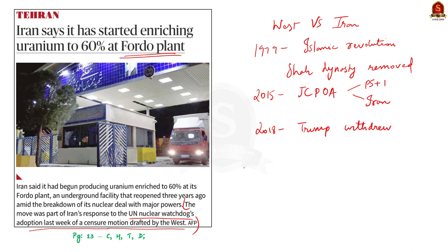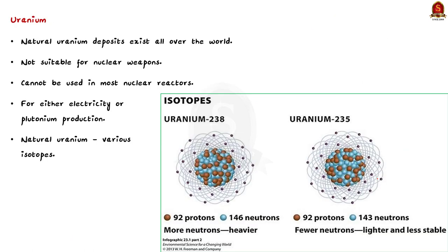This is why we have seen Iran developing nuclear weapons to frighten the Western bloc — the background behind the nuclear enrichment program of Iran. Natural uranium deposits exist all over the world, but uranium in its natural form is not suitable for the production of nuclear weapons, nor can it be used in most nuclear reactors. Natural uranium is composed of various isotopes of uranium. Atoms with the same number of protons but different numbers of neutrons are called isotopes; they share almost the same chemical properties but differ in mass and physical properties.